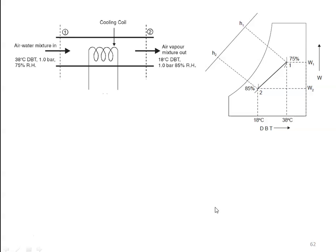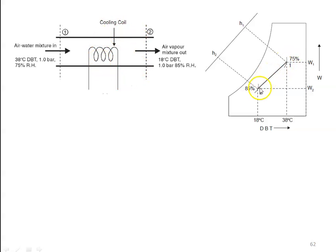This is the process. Air enters with the condition 75 percent relative humidity and 38 degree Celsius and leaves with 18 degree Celsius and 85 percent relative humidity. These are the two process states. There is a cooling coil here. The cooling coil reduces the temperature as well as the specific humidity of the air. The inlet and outlet conditions are shown in the figure.